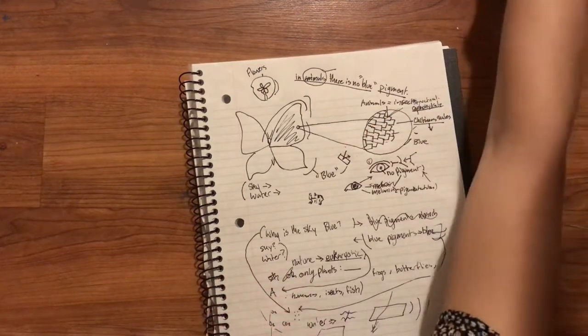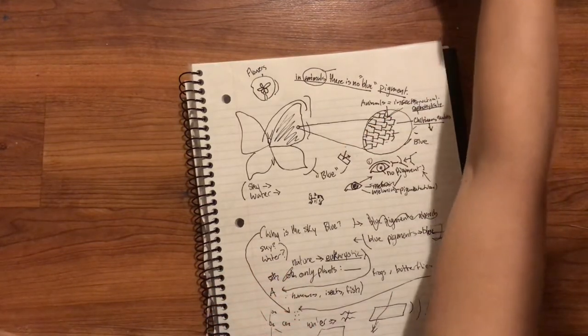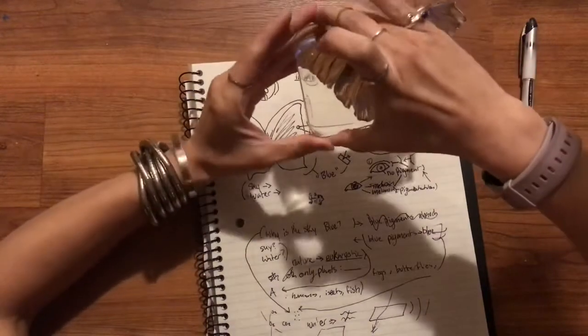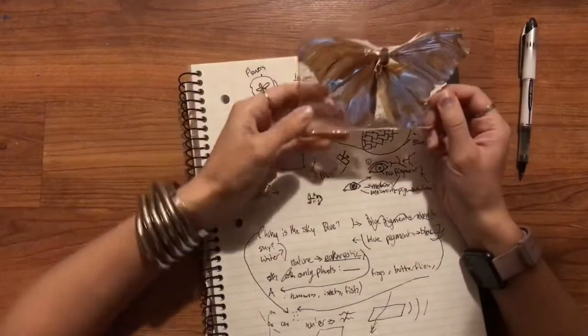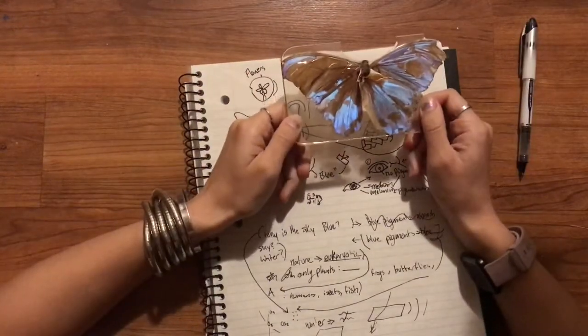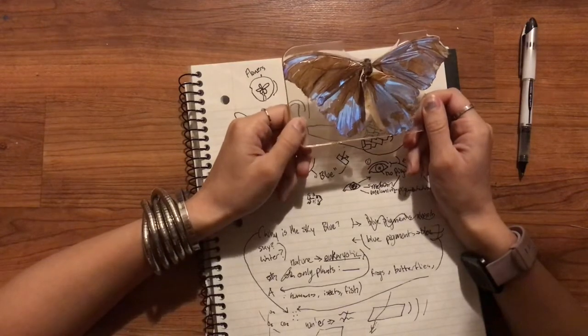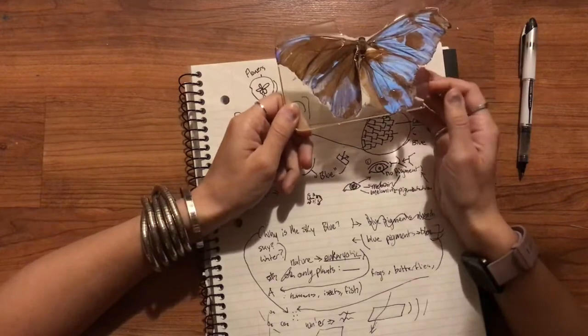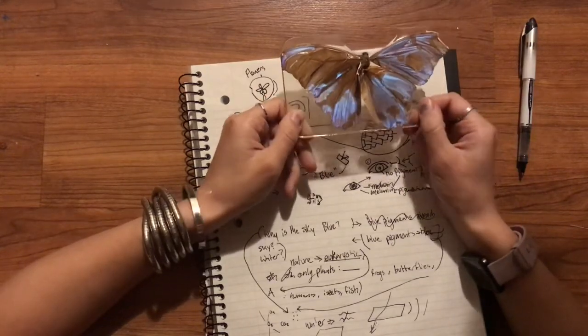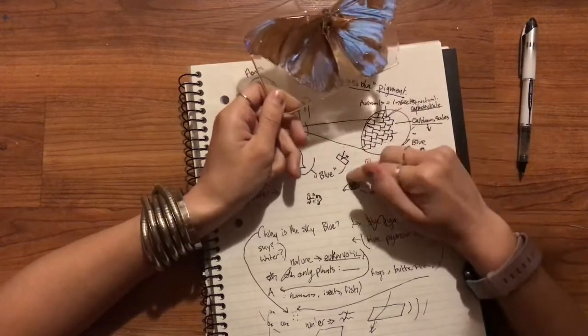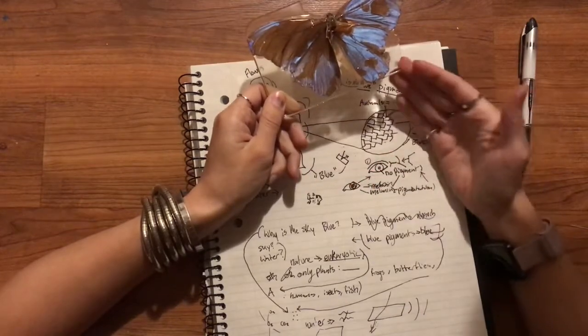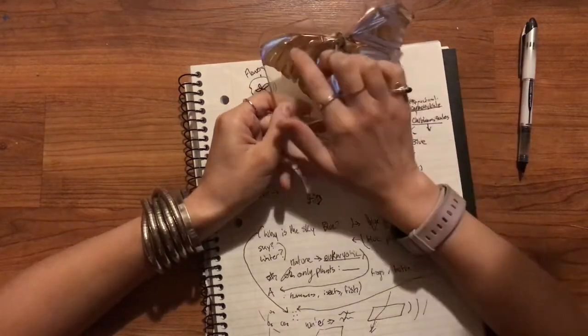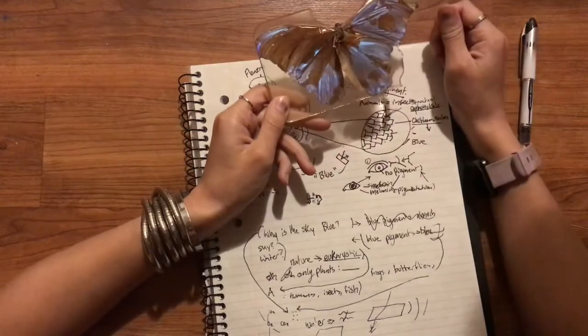So if you take a Morpho butterfly and you try to preserve it in a clear substance that adheres to and fills in all the surfaces, it negates the structural components that allow the butterfly to be blue. It's no longer blue because it was never blue to begin with.